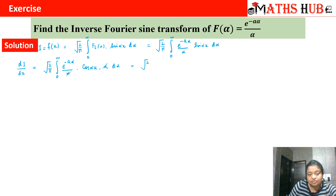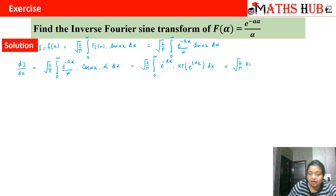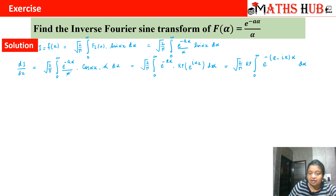We get dI/dx = √(2/π) ∫₀^∞ e^(−aα) cos(αx) dα. We write cos(αx) as the real part of e^(iαx), so this becomes √(2/π) × Re[ ∫₀^∞ e^(−(a − ix)α) dα ]. Integrating gives e^(−(a − ix)α) / (−(a − ix)), evaluated from 0 to ∞.